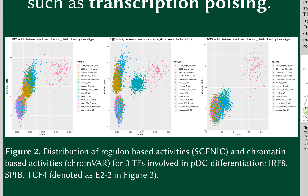But only in the plasmacytoid dendritic cell population is this increased accessibility translated into higher regulon expression. In the case of SPIB, there is also an intermediate state populated by B-lymphocytes.